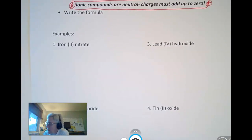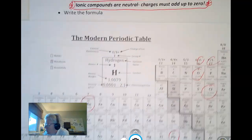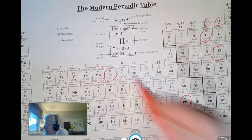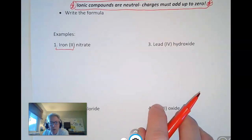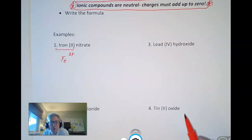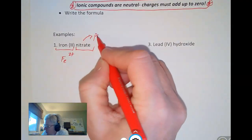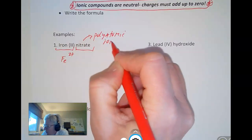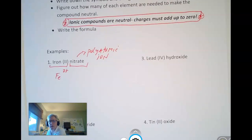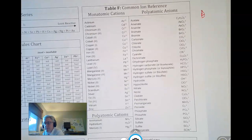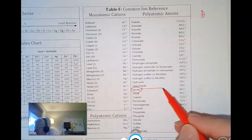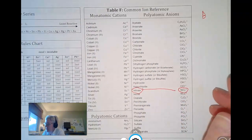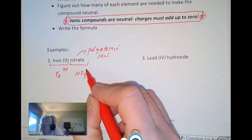Iron 2 nitrate. Iron is right here, F-E. And there's no charge listed here because it's a transition metal. But in this case, we have a Roman numeral 2. So now I do know that the charge on that is a 2+. Nitrate doesn't end in IDE. So that's a big clue that it's a polyatomic ion. And you should look on the back of your periodic table to find nitrate. So let's look here. We'll scan down here, scanning, scanning, scanning. Here's nitrate, and its formula is NO3 with a minus 1 charge.